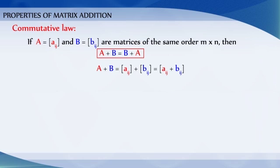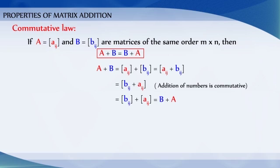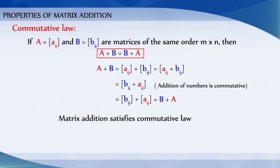Which is equal to matrix Aij plus Bij. This can be written as matrix Bij plus Aij, since addition of numbers is commutative. Now matrix Bij plus Aij is equal to matrix Bij plus matrix Aij, which is equal to B plus A. Therefore, matrix addition satisfies the commutative law.